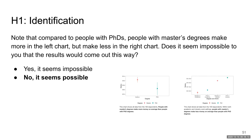Participants were then shown the static image whether they were in the static image condition or the datamations condition, and were asked this question to test our first hypothesis. Note that compared to people with PhDs, people with master's degrees make more in the left chart but make less in the right chart. Does it seem possible to you that the results would come out this way? They could choose yes or no, and the correct answer is no, it seems impossible.